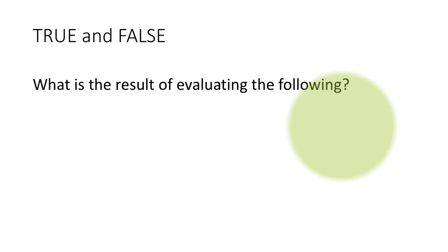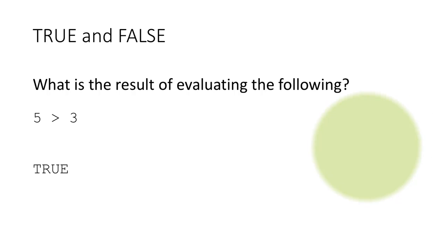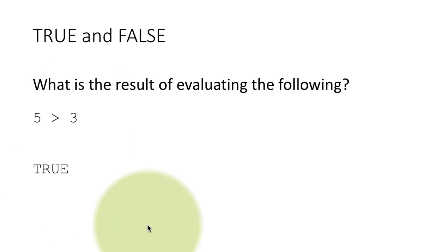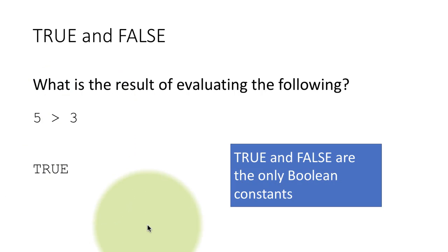What is the result of evaluating the following expression: 5 greater than 3? Well, we know that the result is true because 5 happens to be greater than 3. So that's it, and this is a Boolean value. This can either be true or false, and this one happens to be true.